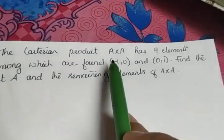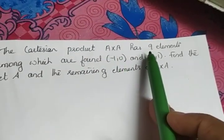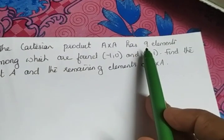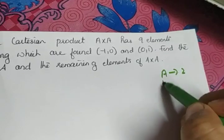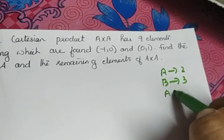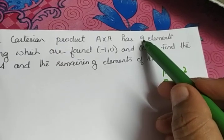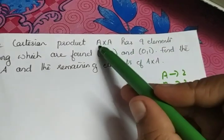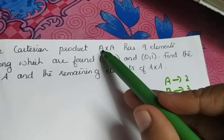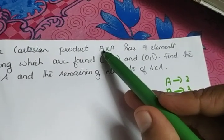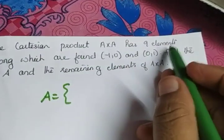The question: the Cartesian product of A cross A has nine elements. If A has two elements and B has three elements, we know that A cross B has six elements — two into three. The same way, A cross A has nine elements, so the number of elements of A must be three.